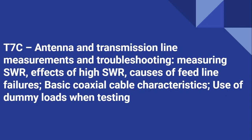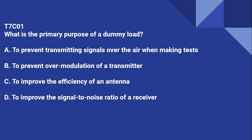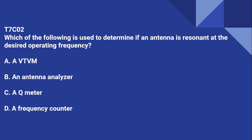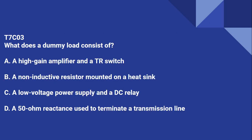T7B11: What are the symptoms of RF feedback in a transmitter or receiver? Reports of garbled, distorted, or unintelligible voice transmissions. T7C covers antenna and transmission line measurements and troubleshooting, measuring SWR, effects of high SWR, causes of feed line failure, basic coaxial cable characteristics, and use of dummy loads when testing. T7C01: What is the primary purpose of a dummy load? To prevent transmitting signals over the air when making tests. T7C02: Which instrument is used to determine if an antenna is resonant at the desired operating frequency? An antenna analyzer. T7C03: What does a dummy load consist of? A non-inductive resistor mounted on a heat sink.